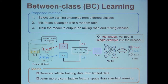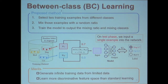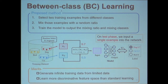Our proposed method is called between-class learning, which is different from the standard learning method. The first step is to select two training examples from different classes, then mix those examples with a random ratio. We then train the model to output the mixing ratio and the mixing classes. For example, we pick one example from the dog class and one from the cat class, mix them with a ratio of 0.7 dog and 0.3 cat, generate the mixed example, input it into the network, and teach the model this is a mixture of 0.7 dog and 0.3 cat.